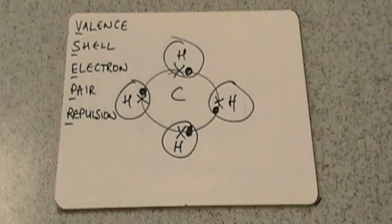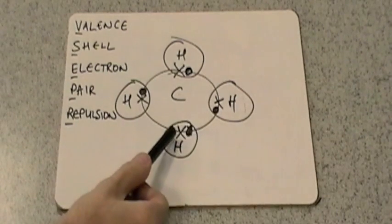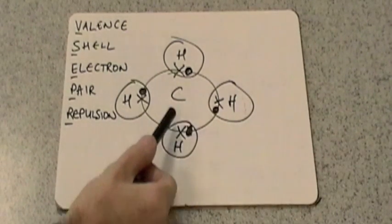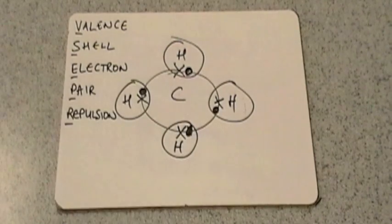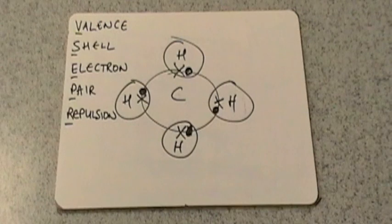So I've got a dot and cross diagram here showing the outer shells only of CH4, which is methane. It's a simple covalent molecule, so we've got the shared pair of electrons here between the hydrogen and the carbon, covalently bonded. By the end of this video we're going to be able to work out what the 3D shape is of this molecule.